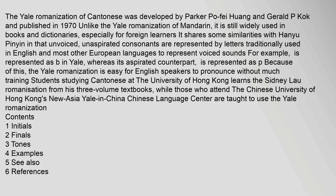The Yale Romanization of Cantonese was developed by Parker Po Faye Huang and Gerald P. Koch and published in 1970. Unlike the Yale Romanization of Mandarin, it is still widely used in books and dictionaries, especially for foreign learners. It shares some similarities with Hanyu Pinyin in that unvoiced, unaspirated consonants are represented by letters traditionally used in English and most other European languages to represent voiced sounds.